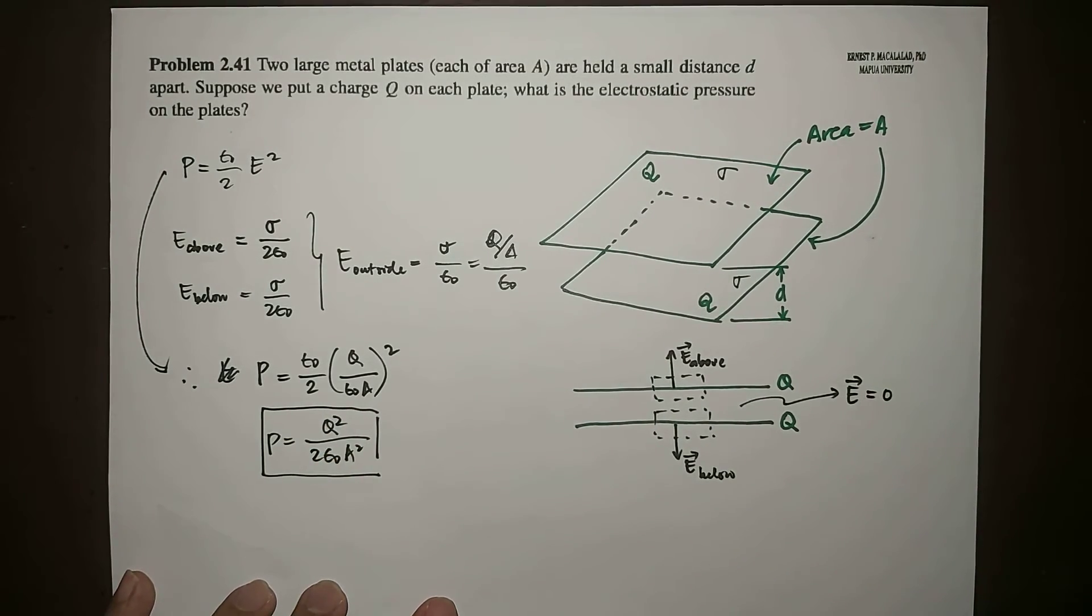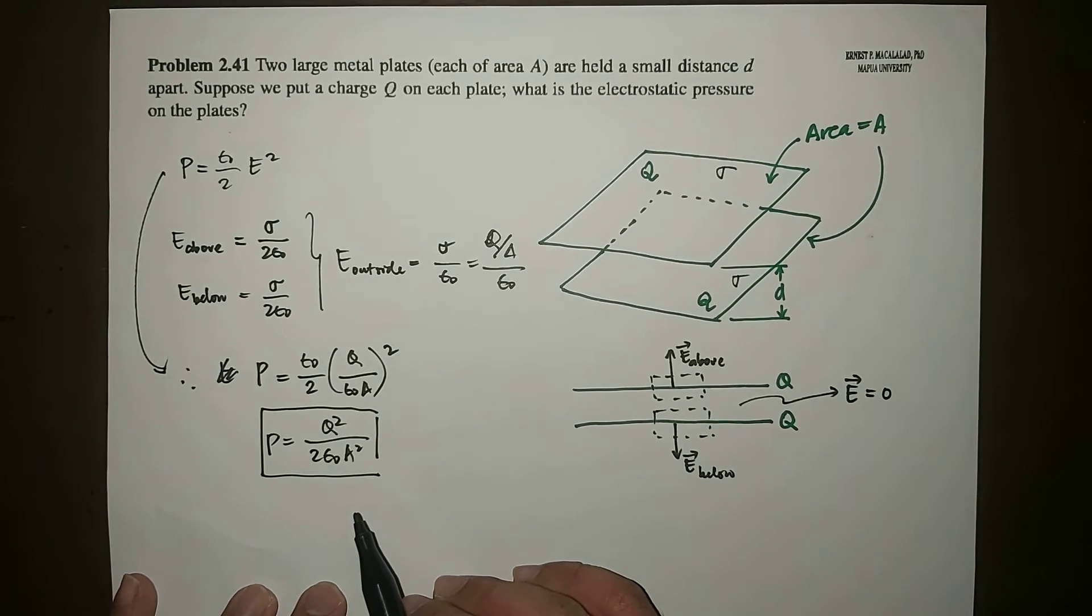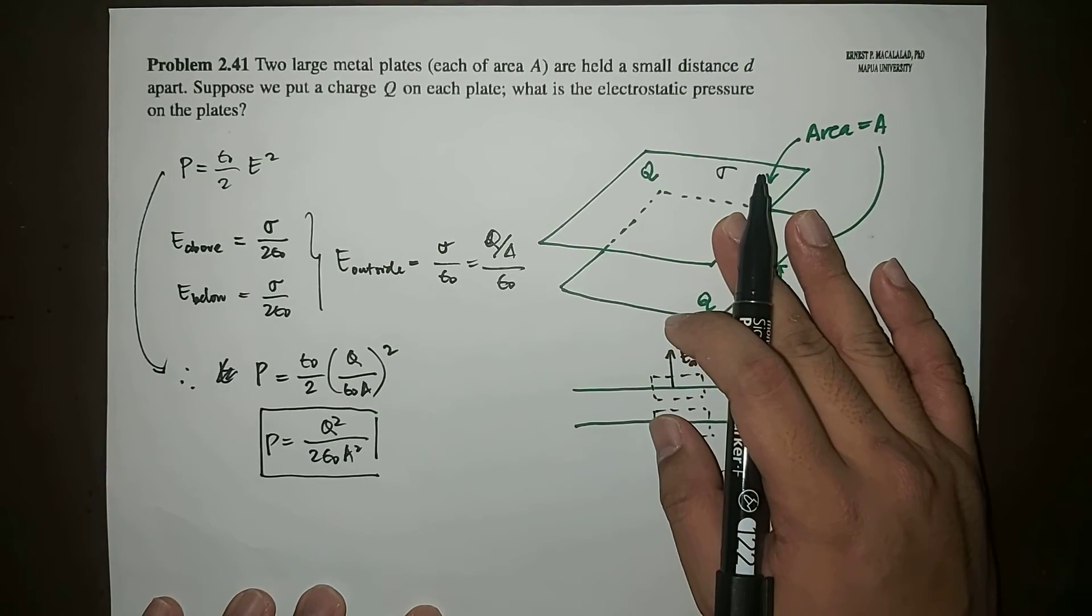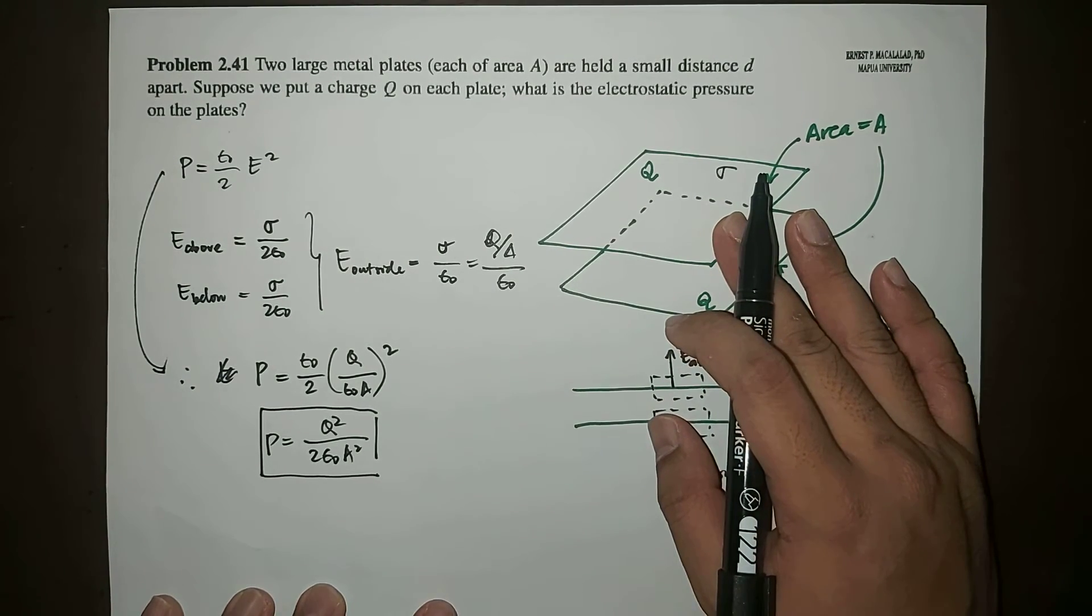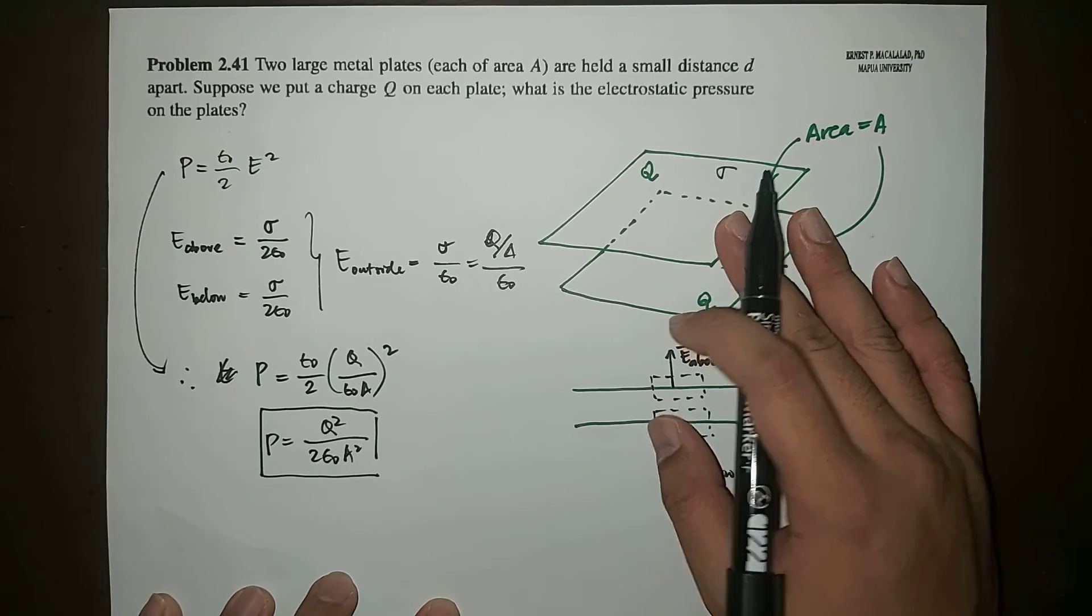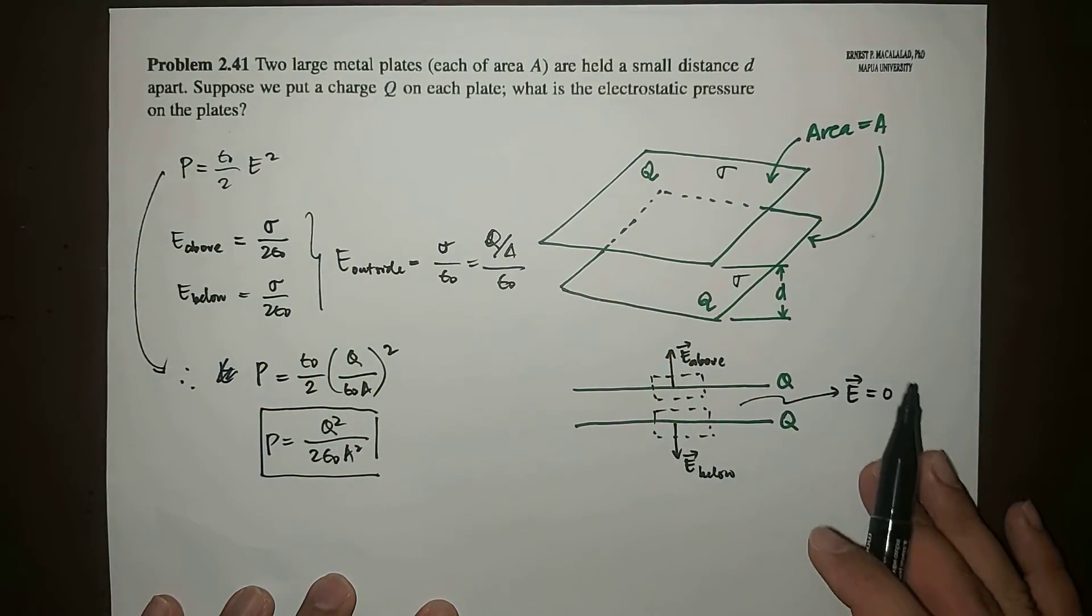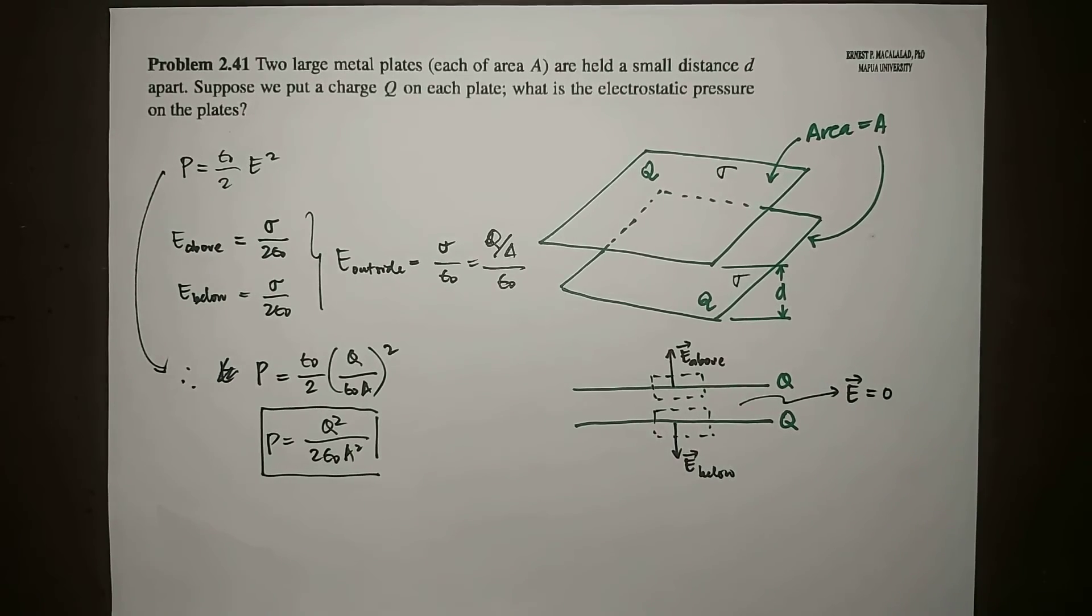Very simple right? So this is now the electrostatic pressure on the plates as set up by this problem of two large metal plates. That's a very short solution to problem 2.41. I hope you learned something about electrostatic pressure here, and see you guys in the next video. Bye.